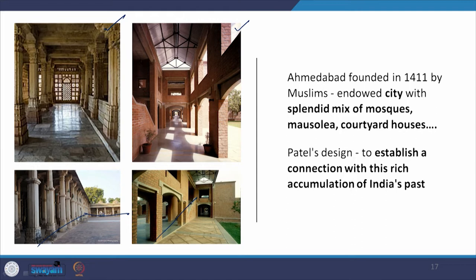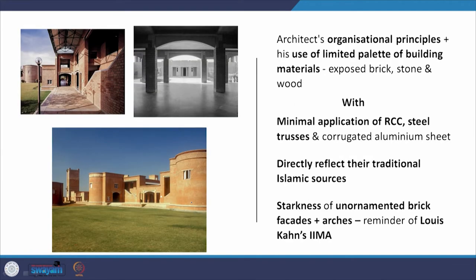The same kind of spaces appear here in Patel's work. The architect's organizational principles rely on a limited palette of building materials — exposed brick, stone, and wood with minimal application of RCC steel trusses, and the use of corrugated aluminum sheet. It is also a direct reflection of Islamic sources, and this starkness in the unornamented brick facade with arches is a reminder of Louis Kahn's IIM Ahmedabad — the difference being that IIM is a more monumental project.